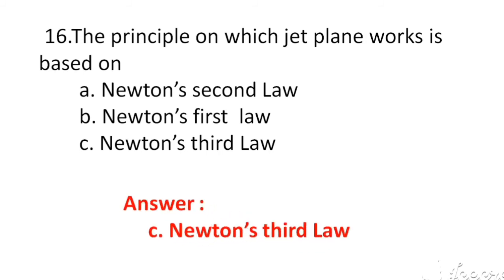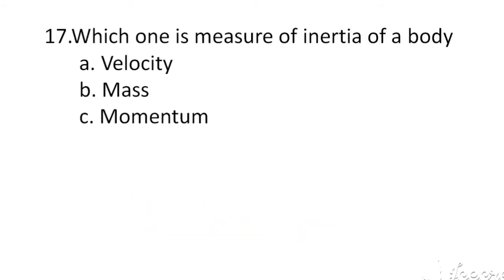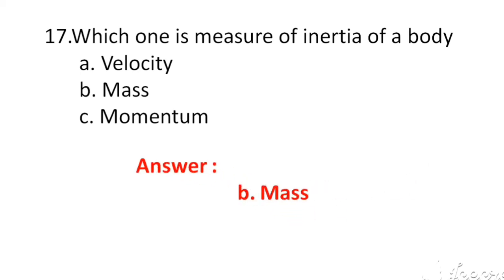Which one is a measure of inertia of a body? The options are A. Velocity, B. Mass, C. Momentum. The right answer is B. Mass.